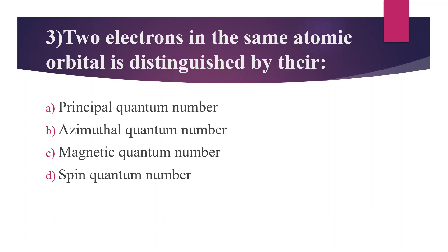Third Question: Two electrons in the same atomic orbital are distinguished by which quantum number? Option A: Principal Quantum Number. Option B: Azimuthal Quantum Number. Option C: Magnetic Quantum Number. Option D: Spin Quantum Number. Answer is Option D, Spin Quantum Number. Principal number refers to shell, Azimuthal number refers to sub-shell, and Magnetic number refers to spatial orientation.